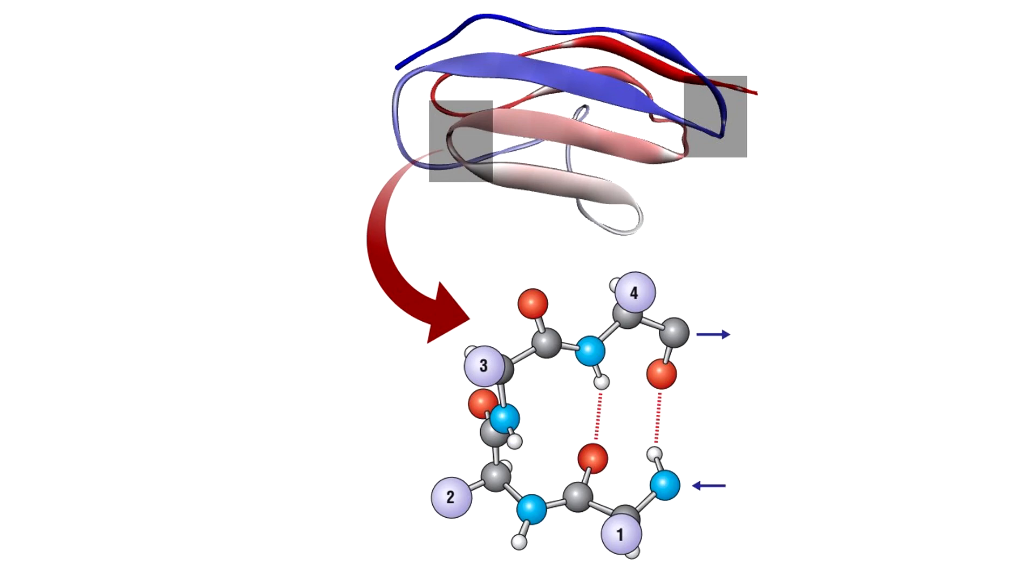The simplest secondary structural element in globular proteins is the beta-turn. It consists of a hydrogen bond between the carbonyl oxygen of the ith residue and the amide group of the i plus 3rd residue, reversing the direction of the chain. This pattern of hydrogen bonding cannot continue throughout the chain because the turn is too tight.